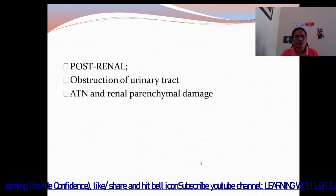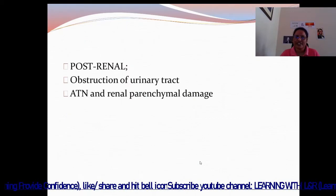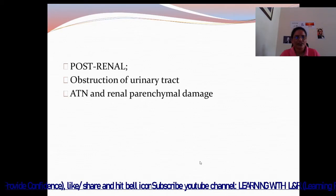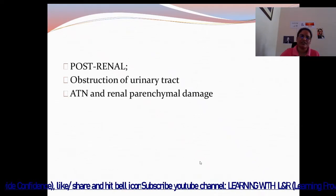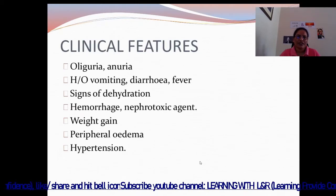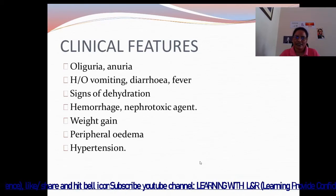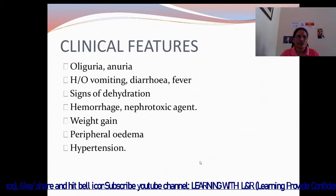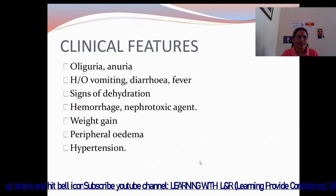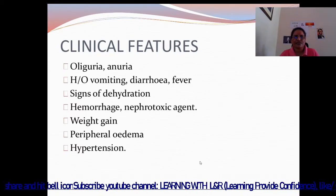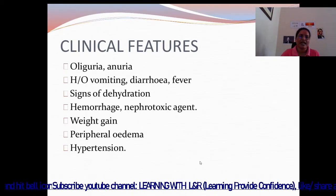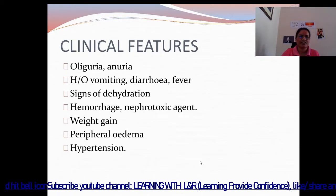In post-renal, there is obstruction of the urinary tract, acute tubular necrosis, and renal parenchymal damage. Clinical features include oliguria, anuria, history of vomiting, diarrhea, fever, signs of dehydration, hemorrhage, nephrotoxic agents, weight gain, peripheral edema, and hypertension.